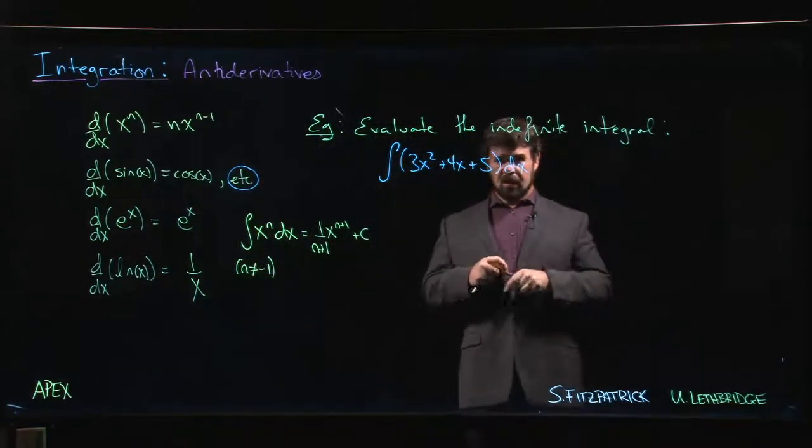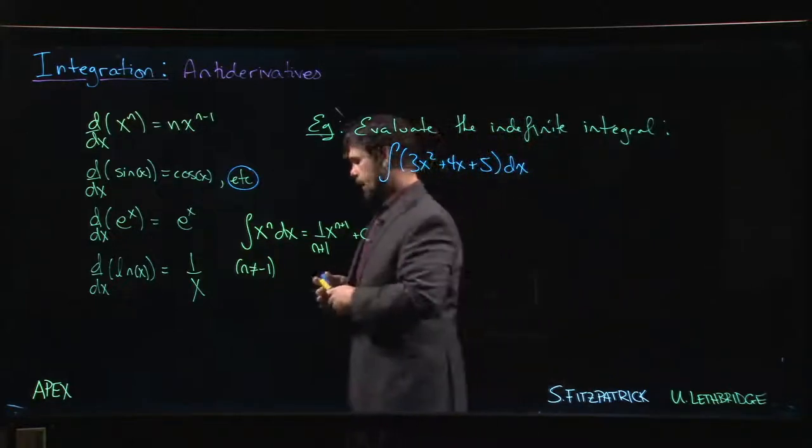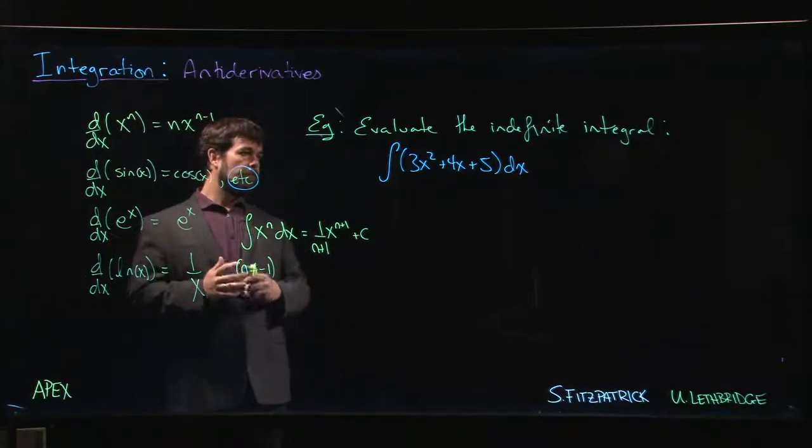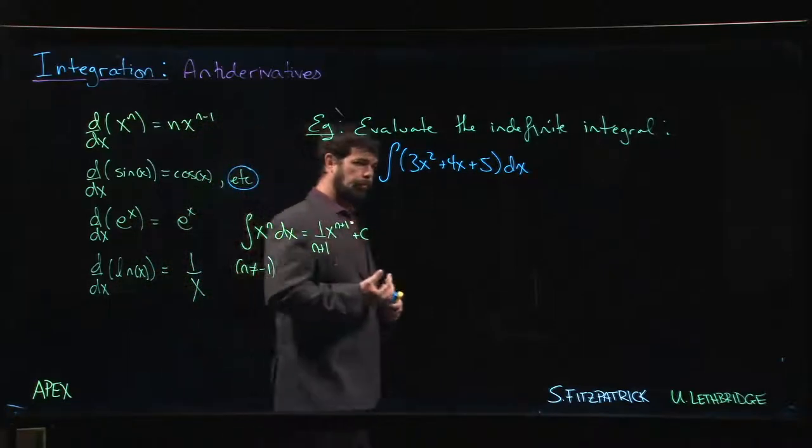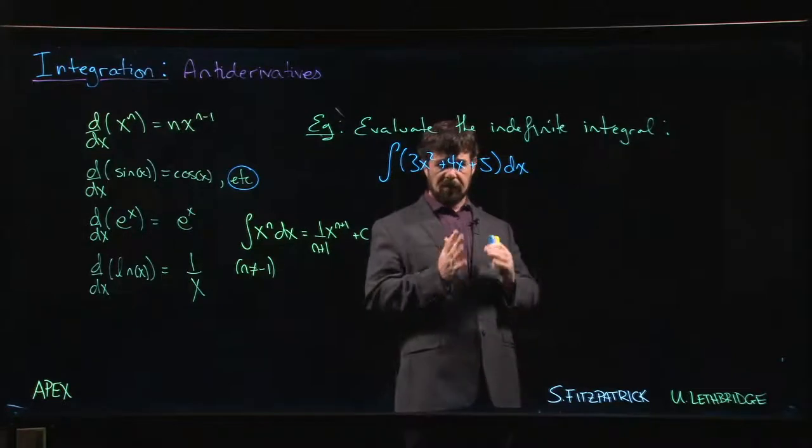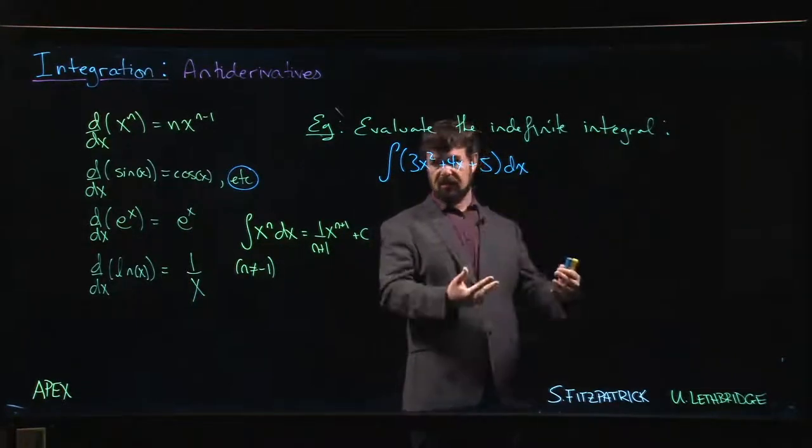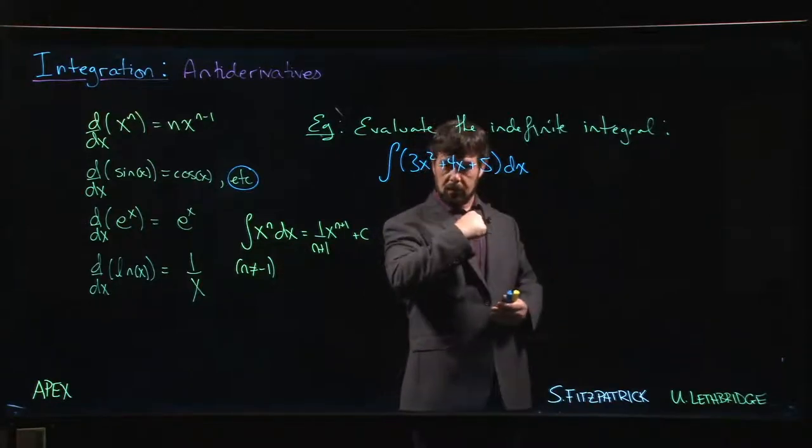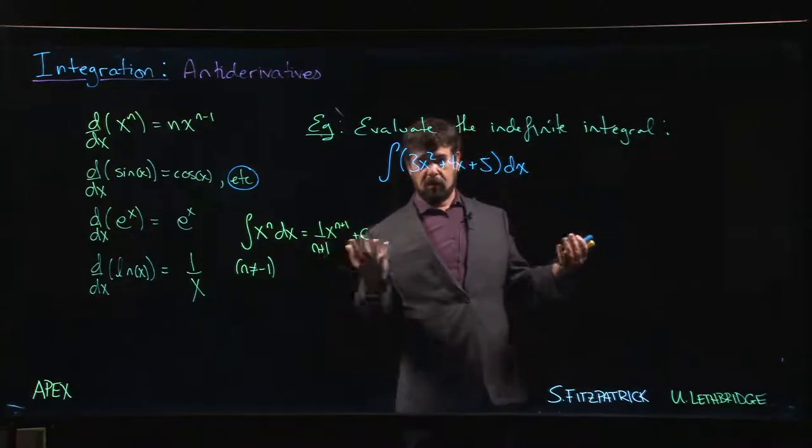So there are a couple of ways that you can tackle a problem like this depending on what approach works better for you. One is you just kind of sit there and break it down and think about it and realize, for one thing, when we take derivatives, we differentiate term by term. So when we're doing antiderivatives, the same should be true. So if we find antiderivatives for these three terms and add them together, that should be the antiderivative for the overall function.